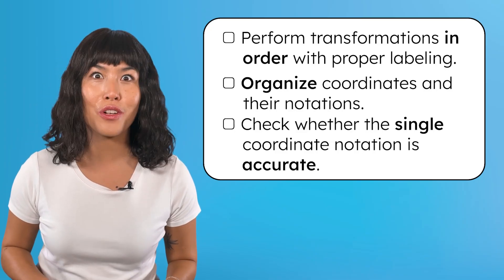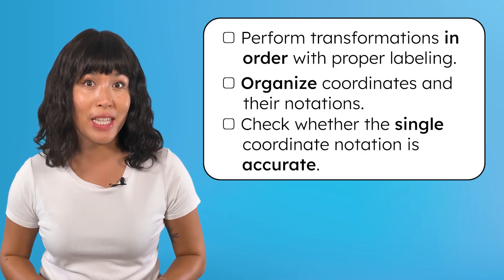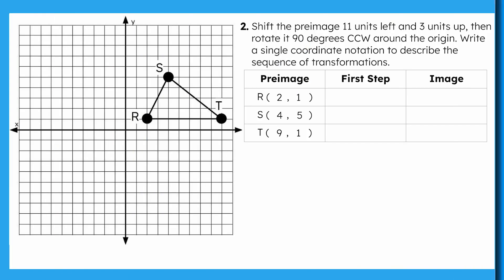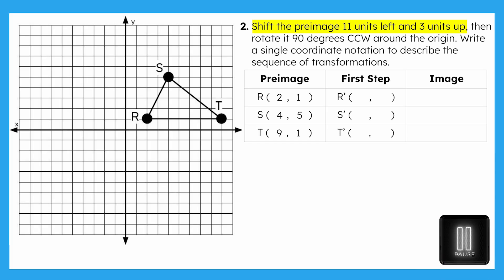Let's apply what we've learned to two more sequences. In this sequence, we are shifting the pre-image 11 units left and 3 units up, followed by a 90-degree counter-clockwise rotation around the origin. The first transformation is a translation 11 units left and 3 units up. Draw the figure after the translation and record the coordinates of RST prime in the table.